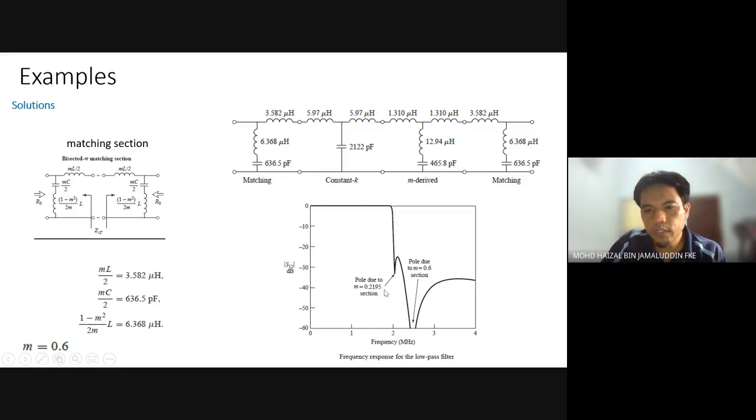You can see that there is a pole of M equivalent to 0.2195 at 2 GHz and another pole at the 0.6 section. We maintain the attenuation around 40 dB at the selected frequency.